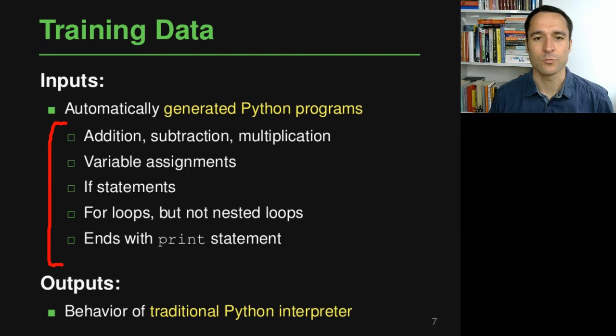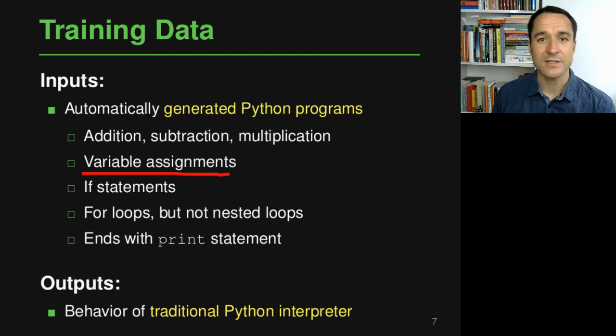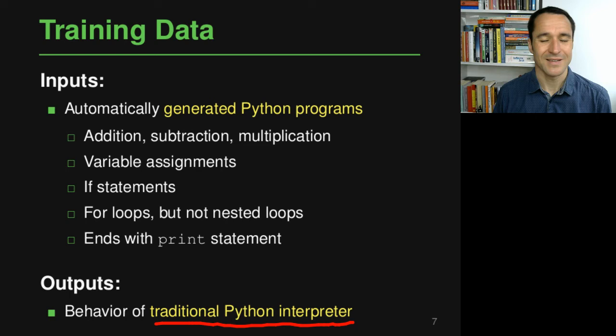Specifically, what the authors do here is use arithmetic operations like addition, subtraction and multiplication. They also use variable assignments, if statements, and for loops, but they do not use any nested loops, which simplifies the task a bit. At the end of each of these generated programs, there's a print statement, which is what produces the actual output of the program. Given these automatically generated Python programs, what the authors do is execute them, which gives you some behavior. To do this, they use a traditional Python interpreter, some existing implementation of the Python language, which then will print something for each of these programs. The printed characters are what we take as the output sequence that the model hopefully learns to predict.